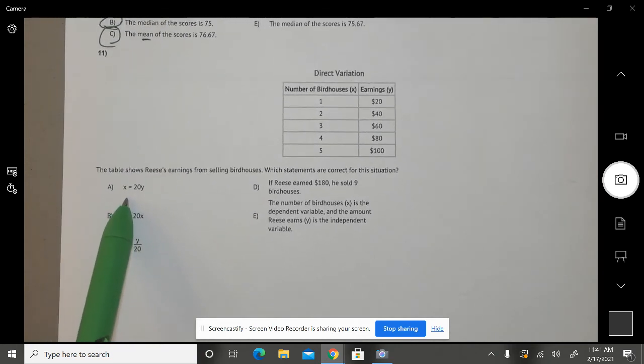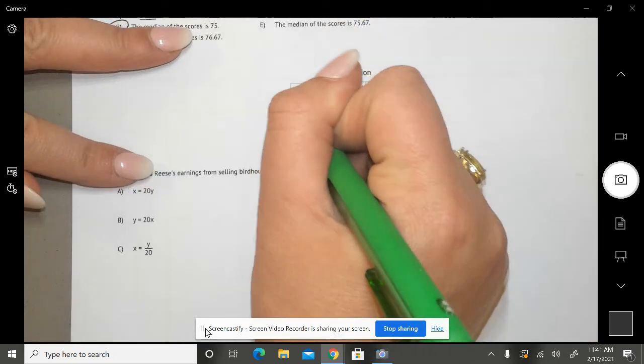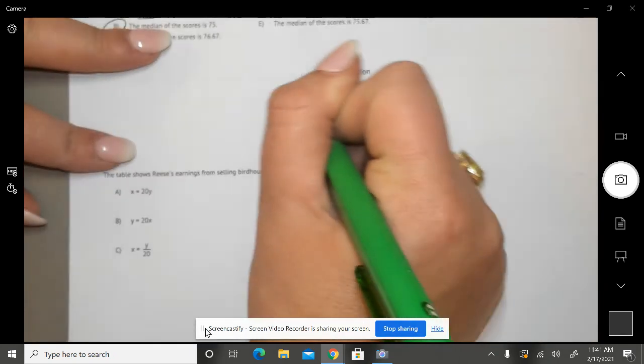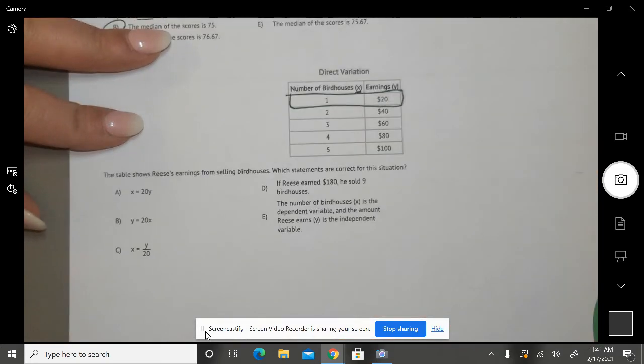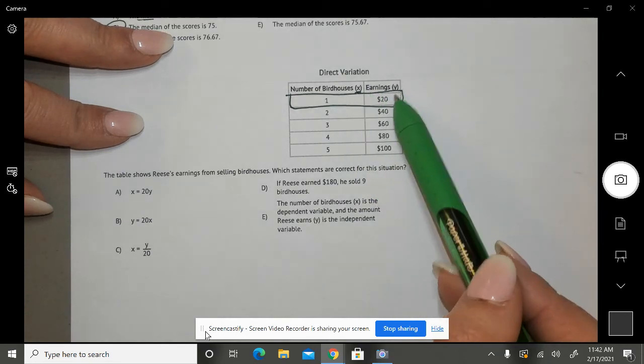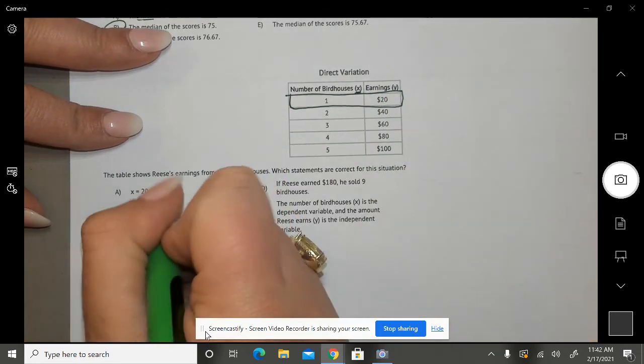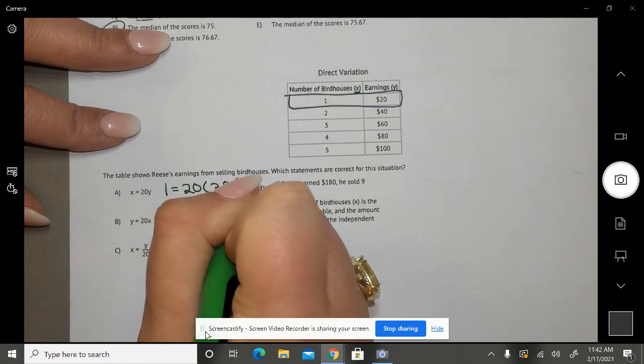Is A going to be true? Yes. All right, so I'm going to use this first row right here to use my numbers to plug in. X is going to equal what? Based on the chart, X is what? 1, and Y is 20.